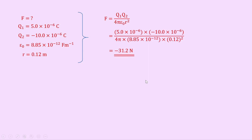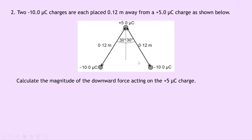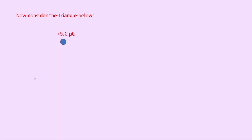We're interested in the magnitude only, so we ignore the negative sign. The horizontal components of the force on the plus 5 microcoulomb charge cancel each other out. We want the magnitude of the downward force, so considering the triangle: if this is our plus 5 microcoulomb charge and this is our minus 10 microcoulomb charge, we can draw the vector between the two with a magnitude of 31.2 newtons. Sketching the downward force vector Fd and labelling the angle as 30 degrees from our diagram, we complete the triangle with a right angle and calculate the downward force using SOHCAHTOA.